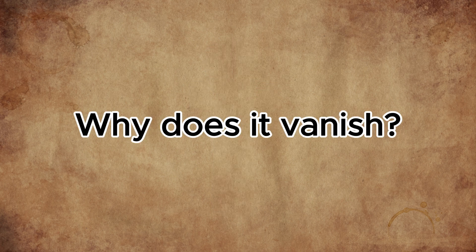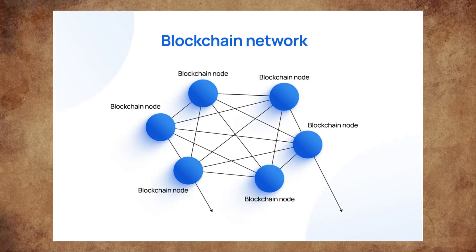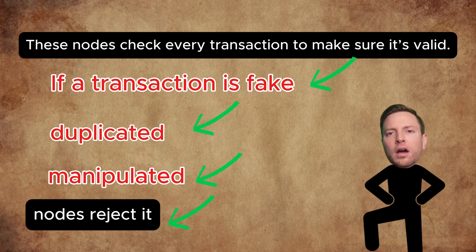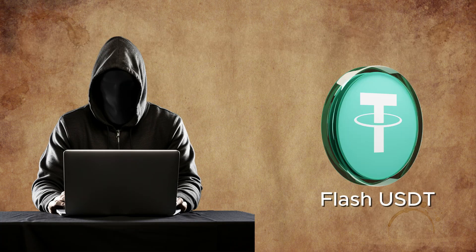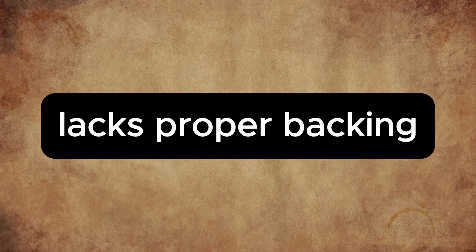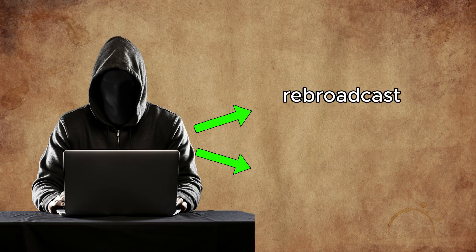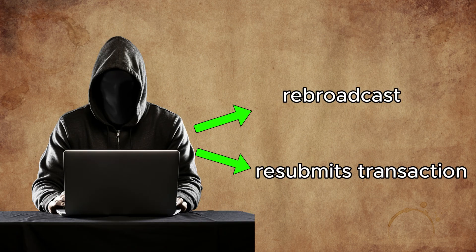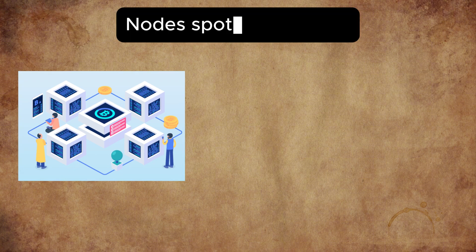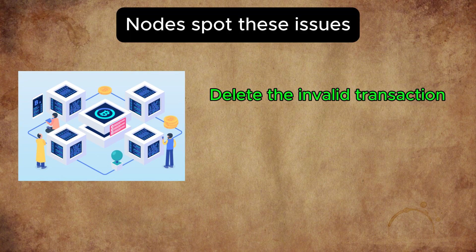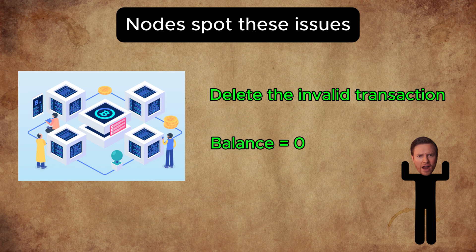Why does it vanish? Blockchains run on a network of computers called nodes. These nodes check every transaction to make sure it's valid. If a transaction is fake, duplicated, or manipulated, nodes reject it. For example, a hacker might send you fake USDT that looks real but lacks proper backing. A transaction might be rebroadcast — meaning someone resubmits an old, already completed transaction to confuse the network. Nodes spot these issues, delete the invalid transaction, and your balance corrects itself.